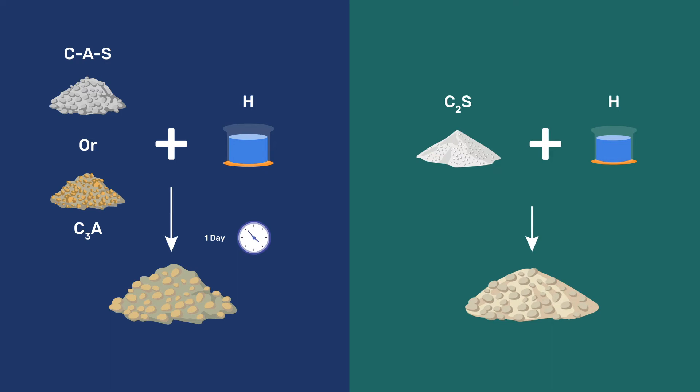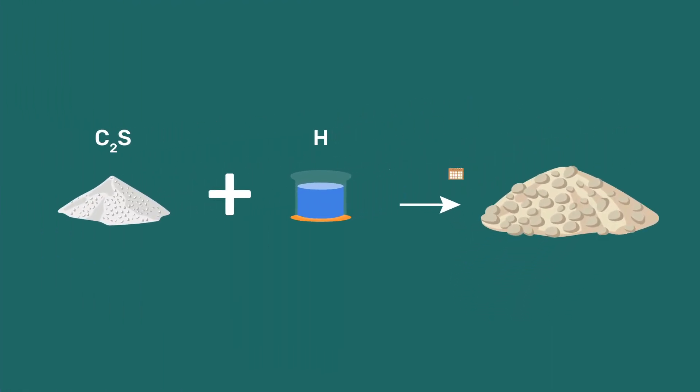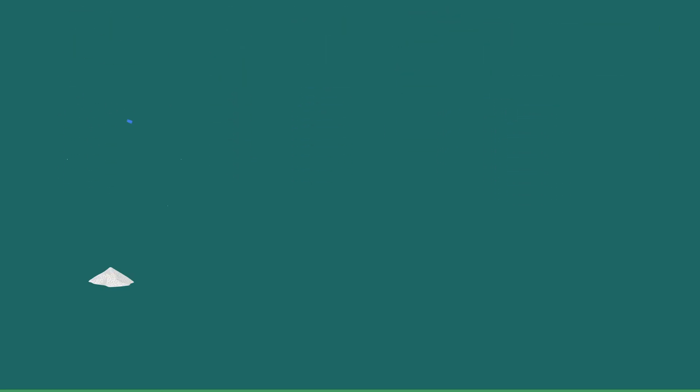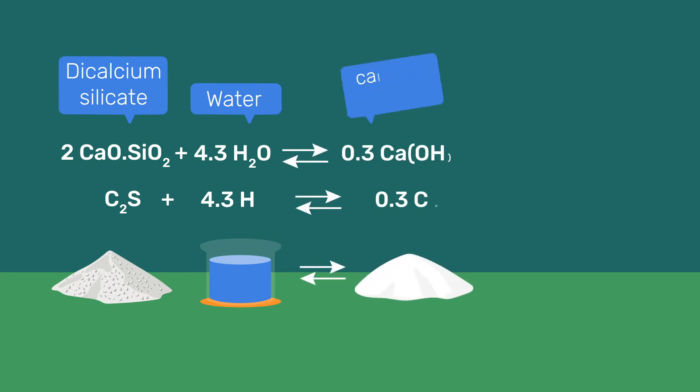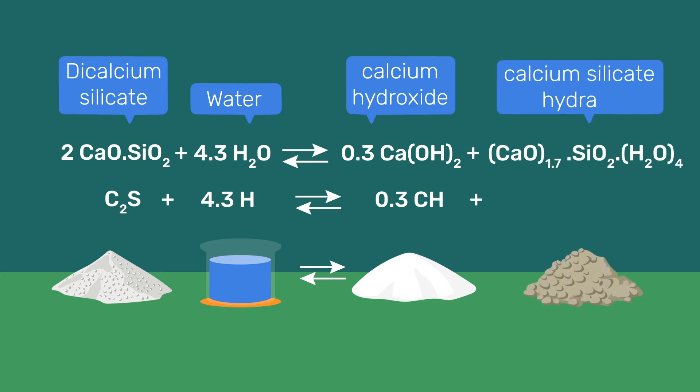However, this reaction is slow as it only starts dominating strength after about 4 weeks and takes several months at least to deliver final strength. 1 mole of C2S reacts with 4.3 moles of water to produce 0.3 moles of calcium hydroxide, and 1 mole of calcium silicate hydrate, C-S-H, taken here as C-1.7-S-H-4.